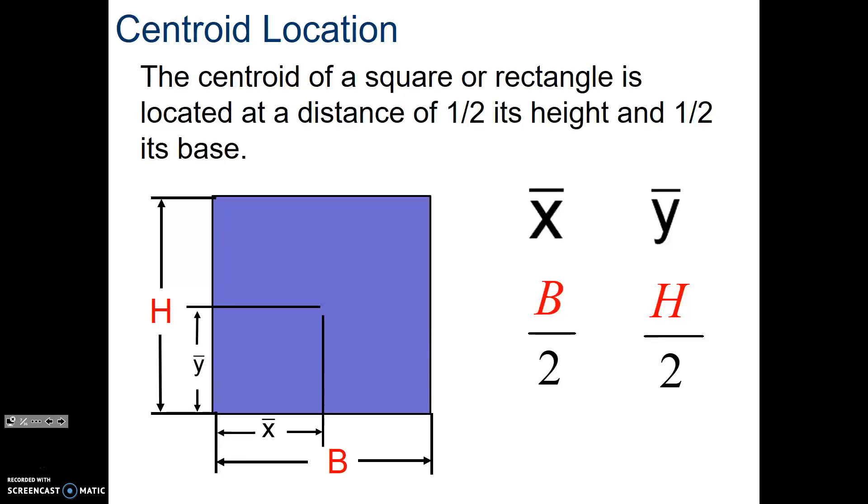Now let's talk about the centroid locations for certain shapes. Squares, it's easy. It's half the length times half the height. The centroid location, x bar and y bar, is just half the base and then half the height.